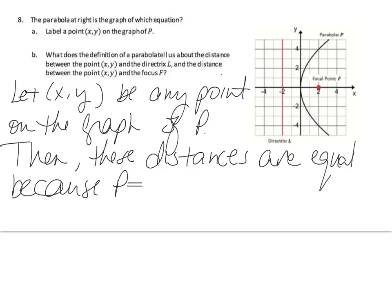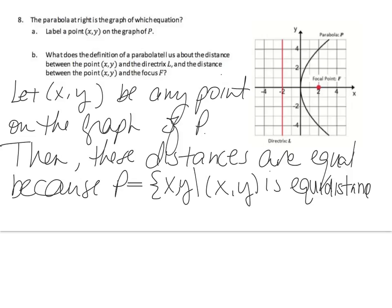P equals the set of (x, y) such that (x, y) is equidistant from F and L. Any point on this parabola has equal distance to the directrix and to the focus. For example, I count four boxes to the directrix and four boxes to the focus from a given point — so this distance and that distance are equal.